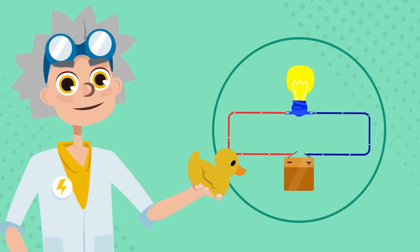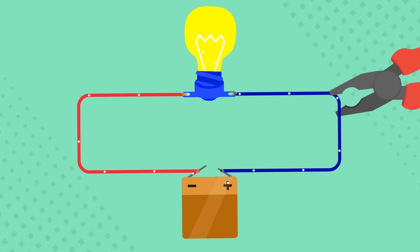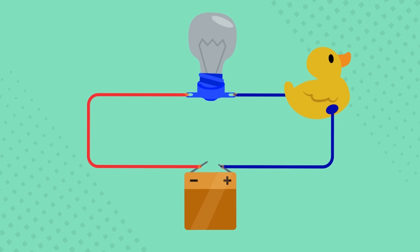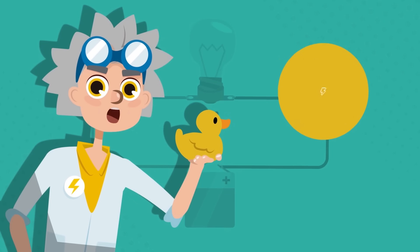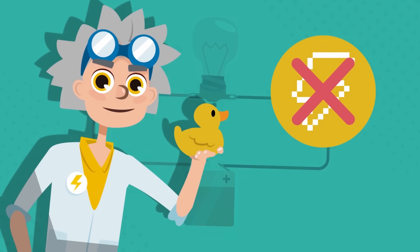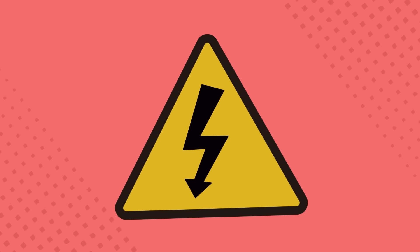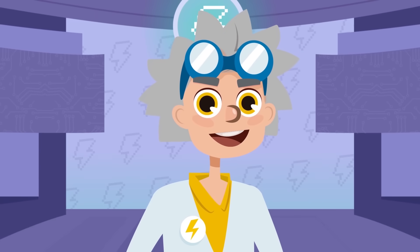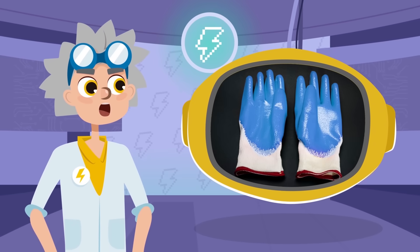Let's try another type of material. Look at this rubber ducky — if we attach it to the circuit, will the light bulb turn on? The light bulb didn't turn on! The rubber ducky is made of rubber, and rubber is an insulating material. Insulating materials do not allow electric charges to flow through them. Other materials such as paper, plastic, or glass are also insulators. Since electricity can be very dangerous, insulating materials are used to protect us — for example, the outside of wires is made of plastic and electrician's gloves are made of rubber.